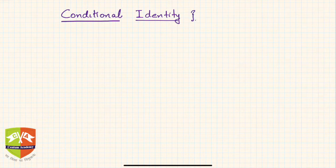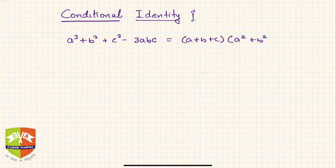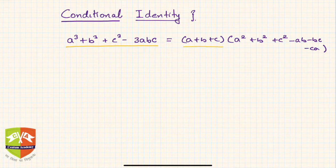The identity is: a³ + b³ + c³ - 3abc = (a + b + c)(a² + b² + c² - ab - bc - ca). You can add this identity to the list of identities you have already created.